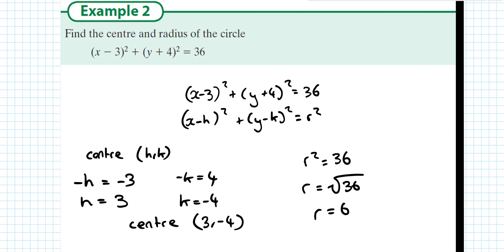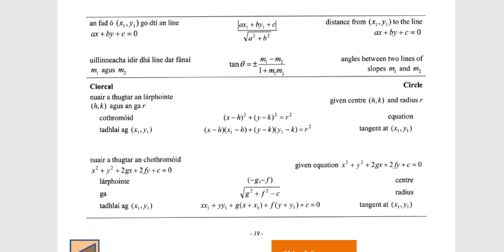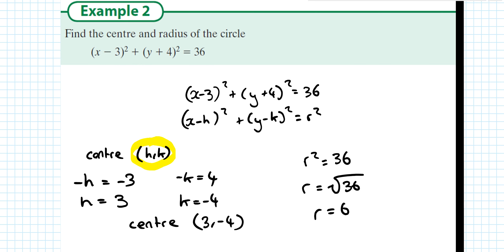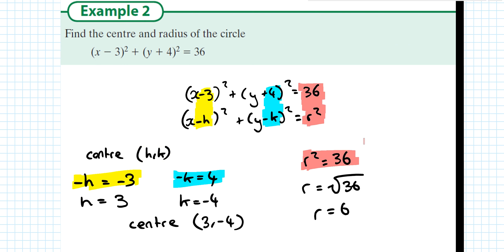Alternatively, they might give you the equation of a circle in non-expanded form like (x − 3)² + (y + 4)² = 36. Comparing directly to the log tables formula (x − h)² + (y − k)² = r², the centre is (h, k). So matching −h with −3 gives h = 3, and matching −k with 4 gives k = −4. Then r² = 36, so r = ±√36. We only take the positive value since a radius must be a positive distance, so r = 6.